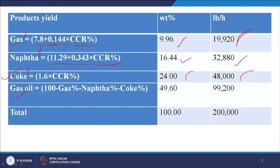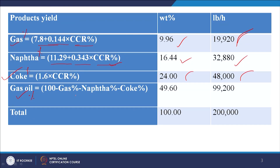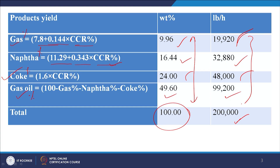Gas oil is calculated by difference: 100 minus gas percent minus naphtha percent minus coke percent = 100 − 9.96 − 16.44 − 24 = 49.60 weight percent, equivalent to 99,200 pound per hour. Summing all products gives 100% and 2 lakhs pound per hour total — this is the product distribution on a mass basis.